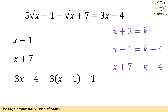To solve this problem I'm going to start with a replacement — but how can I find this replacement? Let's take a look at what values we have inside this equation. We have radical(x minus 1), radical(x plus 7), and 3x minus 4.